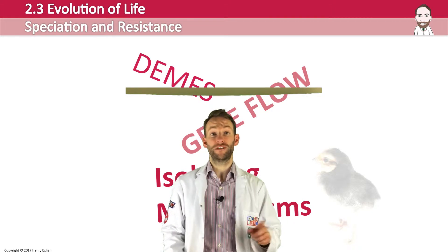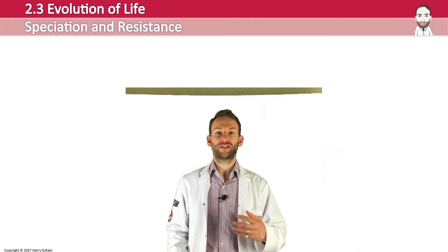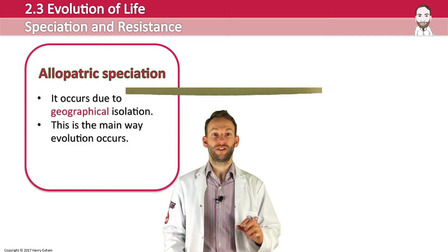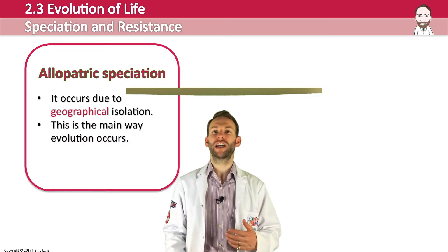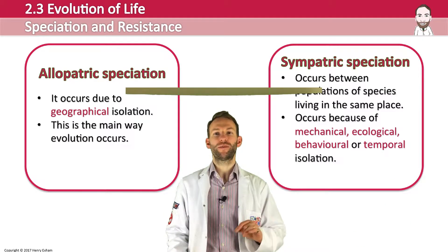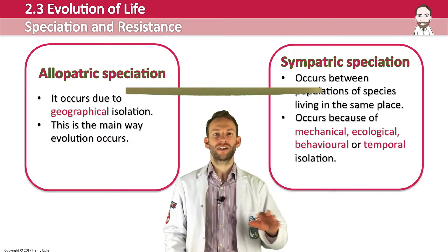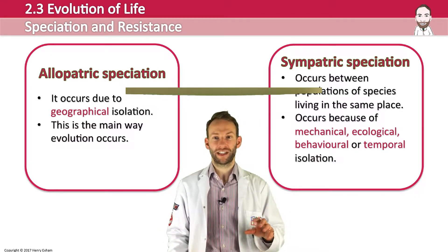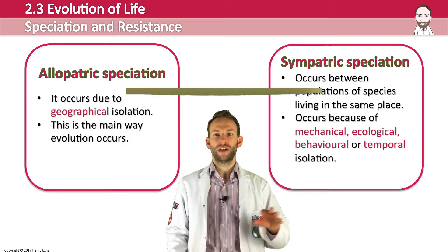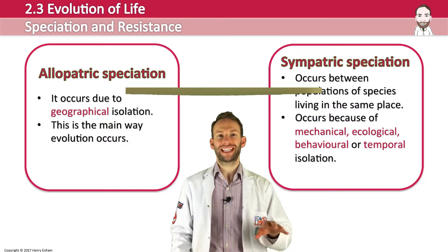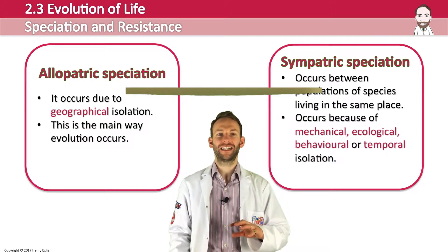There are two main forms of isolating mechanism. Allopatric speciation occurs due to geographical isolation — this is the most common type and the main way evolution occurs. There is also sympatric speciation, which occurs between populations of species living in the same place. They're not isolated geographically, but other things can still separate them: mechanical isolation, ecological, behavioral, or temporal isolation.